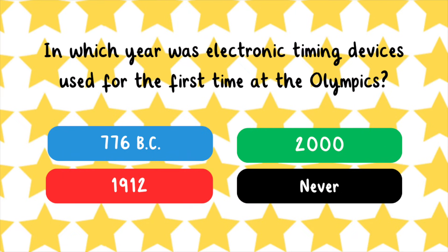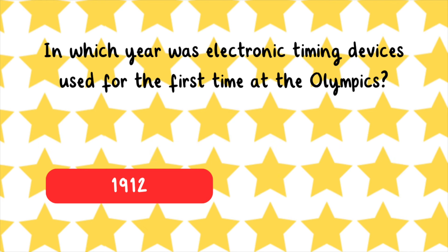In which year were electronic timing devices used for the first time at the Olympics? 776 B.C., 1912, 2000, or never? The event was held at the Olympics from 1900 to 1920.